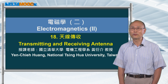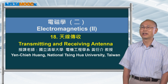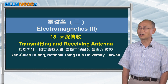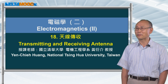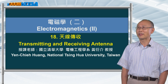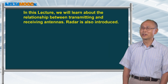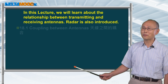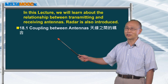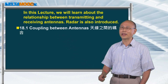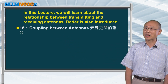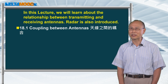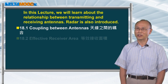Previously, we always focused on one antenna. And now we want to have two antennas — one transmitting a signal and the other receiving a signal. So first I'm going to introduce the coupling between two antennas so that we can understand how antennas can talk to each other.